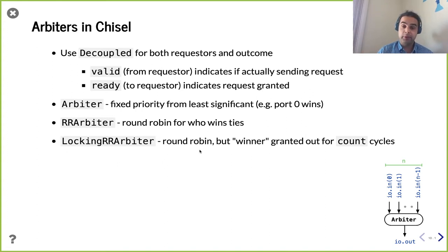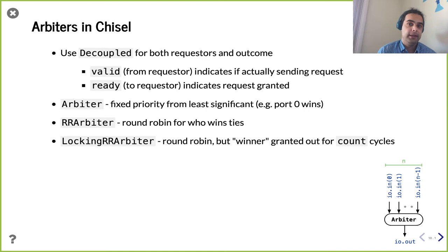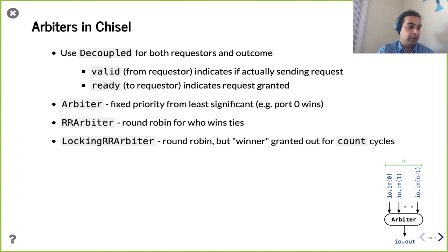The `RRArbiter` is not perfectly balanced, but it's definitely better in most cases. These two handle the vast majority of cases. However, there's a third arbiter — the locking round-robin arbiter — which has an additional parameter `count` controlling how long you hold the resource. The round-robin arbiter gives a result combinationally but updates internal state at the clock edge. With the locking RR arbiter, when someone wins the grant, they get to keep it for `count` cycles. The RR arbiter is actually a special case of locking arbiter with `count` equal to one.